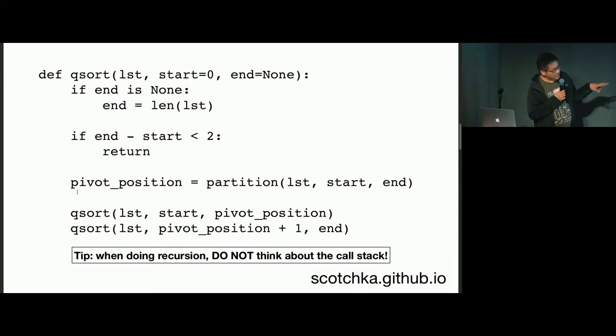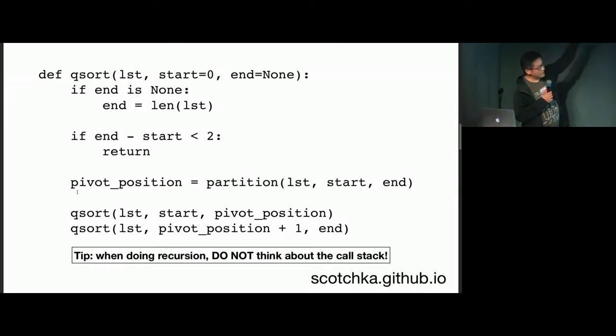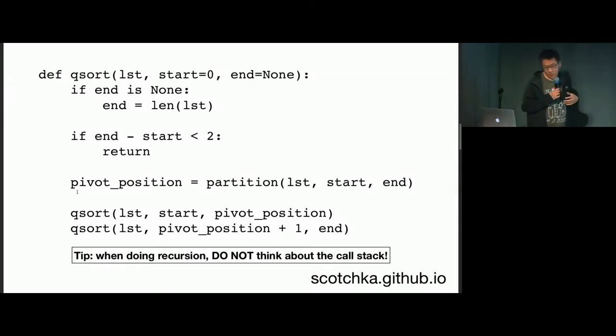And then the two recursive calls simply say: I have the pivot. Now it just goes towards the left and it goes towards the right. And after this whole function finishes, the whole list is sorted.